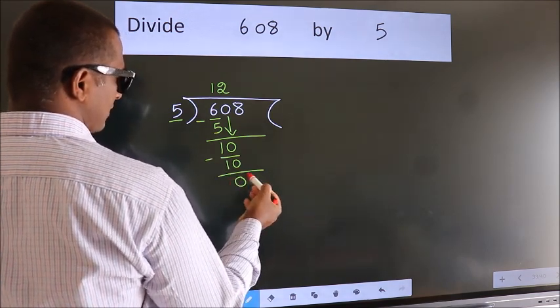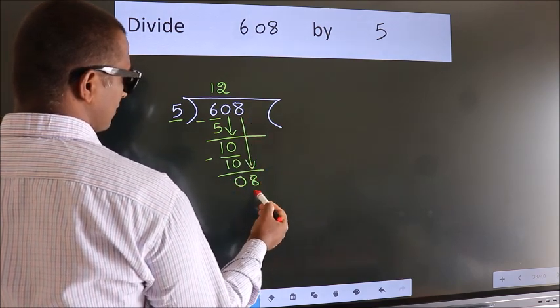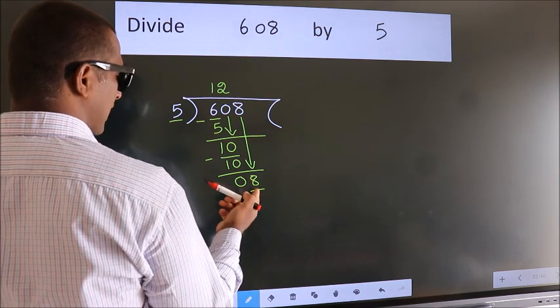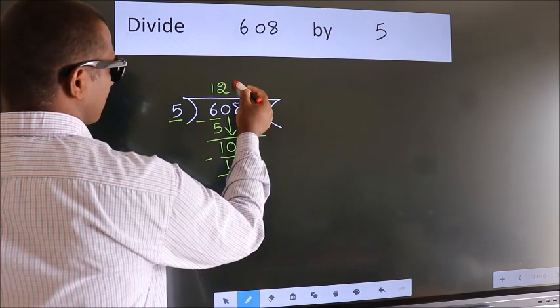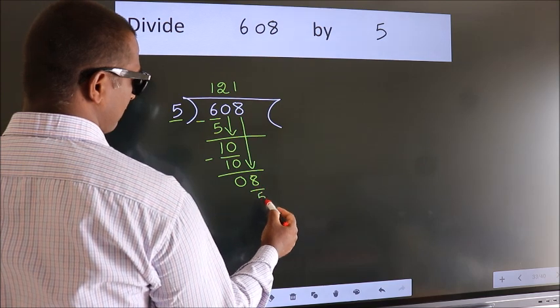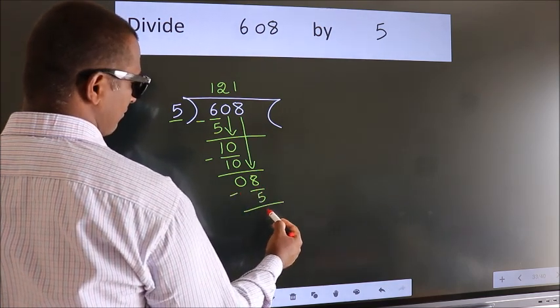After this, bring down the beside number. 8 down, so 8. A number close to 8 in the 5 table is 5 once 5. Now we subtract. We get 3.